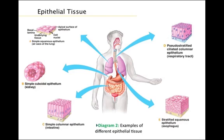The first type of tissue we will discuss is epithelial tissue, which is composed of sheets of cells that cover body surfaces and line internal organs. Simple squamous epithelium is thin, allowing diffusion to take part. We find it lining our capillaries, which are the smallest blood vessels, and the air sacs of our lungs.